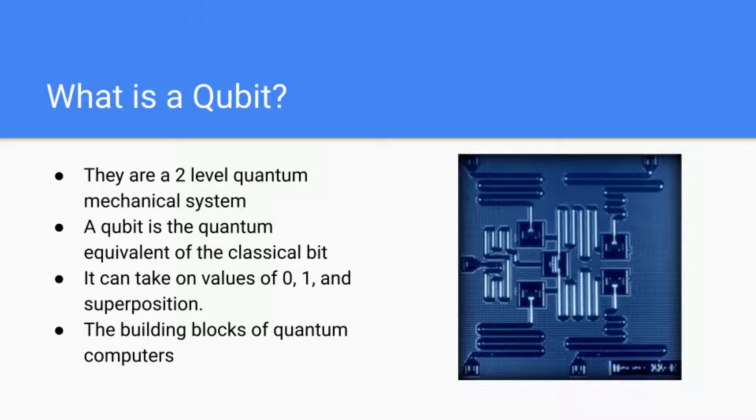While superposition isn't really a value, it's more of a state. So you can think of qubits as being able to take on three states: zero, one, and superposition. And finally, qubits are the building blocks of quantum computers.